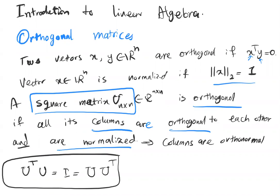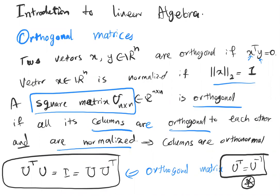This happens for an orthogonal matrix. It also has another important meaning: for an orthogonal matrix, U transpose is equal to U inverse. This is a very important feature of orthogonal matrices.